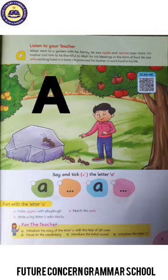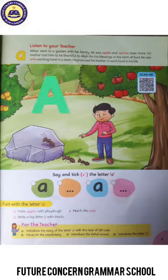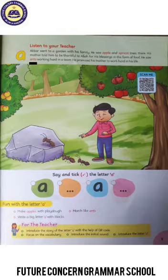In the story, the letter A has been introduced to us: Akbar, apple, apricot, and ants. In the picture, we have also seen Akbar, apple, apricot, and ants.